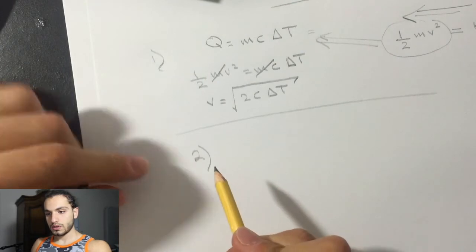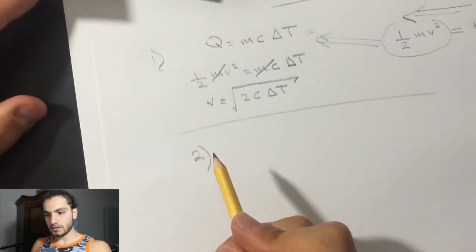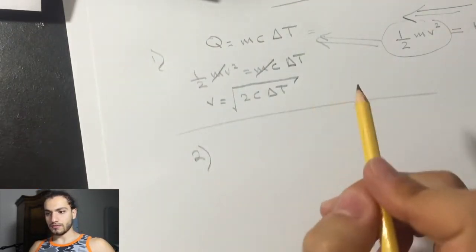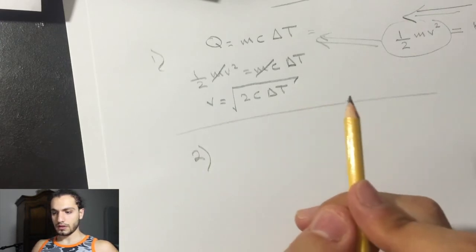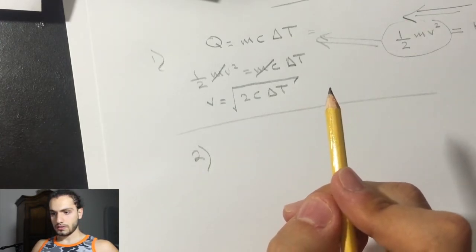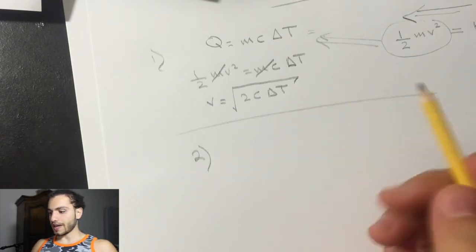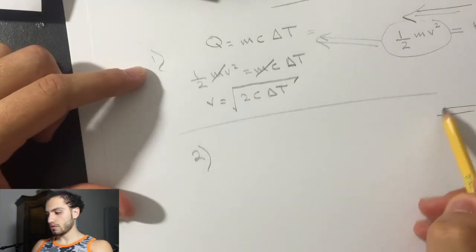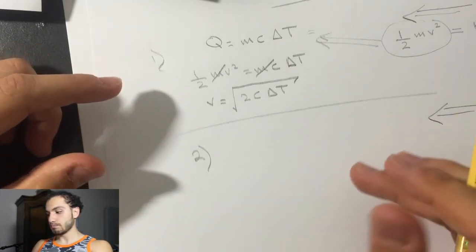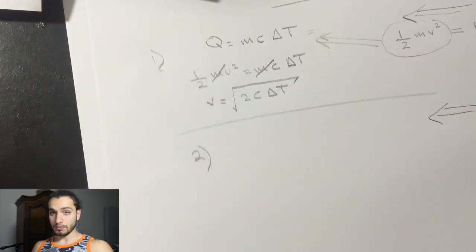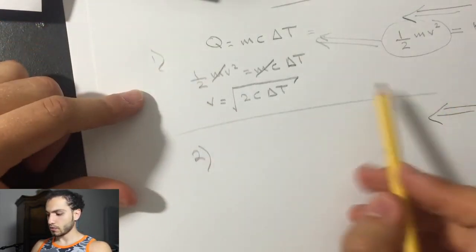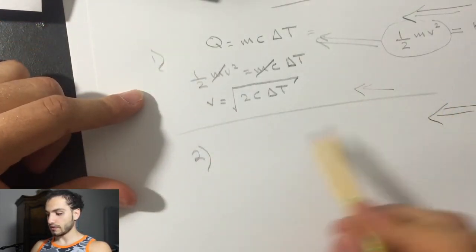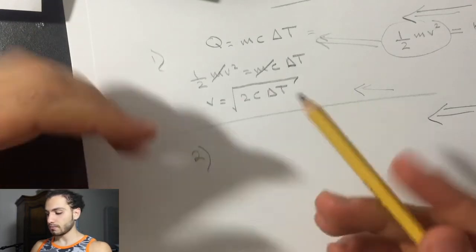Let's go to number two. Number two, they give us the latent heat of the iron. So after it reaches the wall and it's almost going to melt, they want it after it melts completely. So this one was before it melts, and they want question number two after it melts.